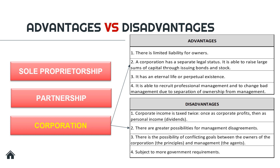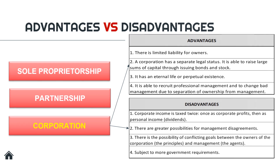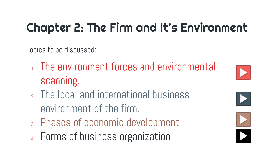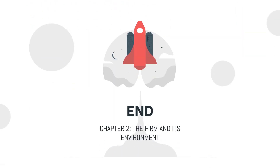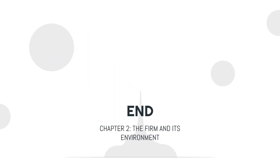That covers the advantages and disadvantages of sole proprietorship, partnership, and corporation. We're done with the last lesson of chapter 2: the forms of business organization. To wrap up chapter 2, we've discussed the environment forces and environmental scanning, the local and international business environment of the firm, the phases of economic development, and the forms of business organization. That ends chapter 2: The Firm and Its Environment. Please be ready for your summative assessment next week on chapter 2. Thank you.